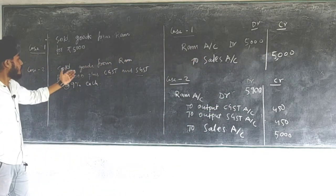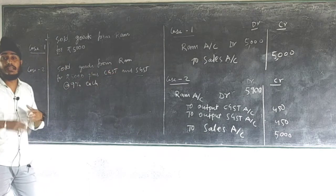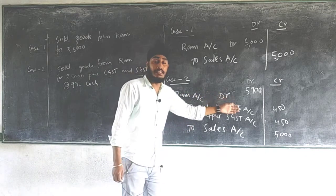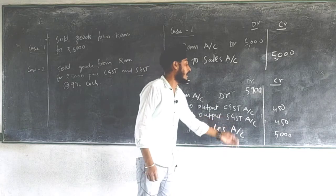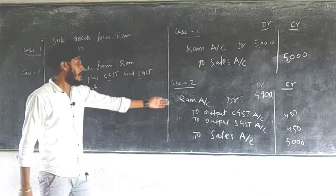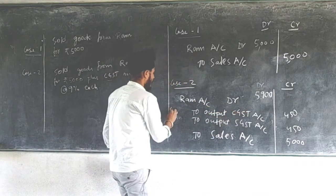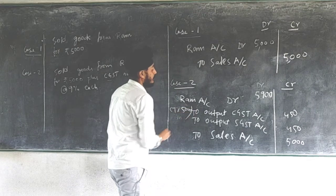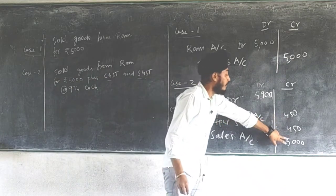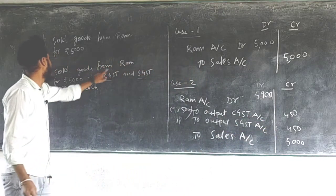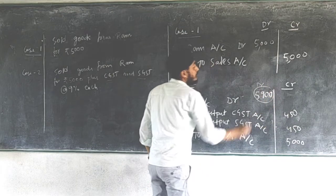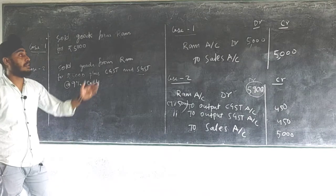Case two: sold goods to Ram for rupees 5000 plus CGST and SGST at the rate of 9% each. When GST is charged during sale, the journal entry is: Ram Account debit, to Output CGST Account, to Output SGST Account, to Sales Account. Output CGST = 9% of 5000 = 450; Output SGST = 9% of 5000 = 450. So Ram Account = 5000 + 450 + 450 = 5900. Whenever there is a sale, we write Output GST on the credit side.